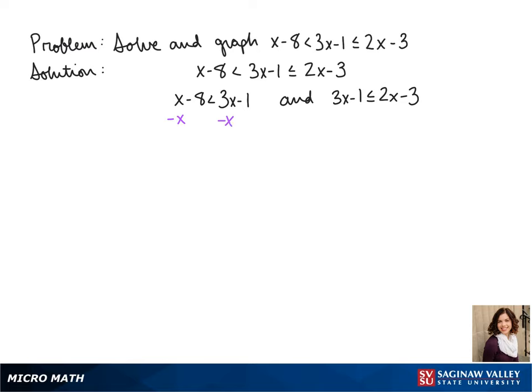We subtract x on both sides, so we get negative 8 is less than 2x minus 1. Next we add 1 to both sides, so we get negative 7 is less than 2x. We divide both sides by 2 and get x is greater than negative 7 halves.